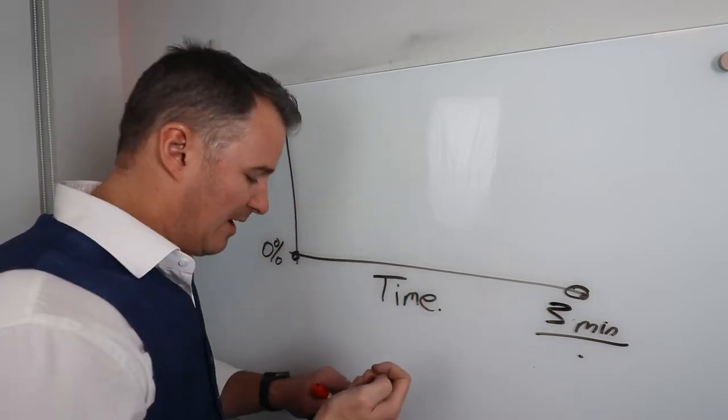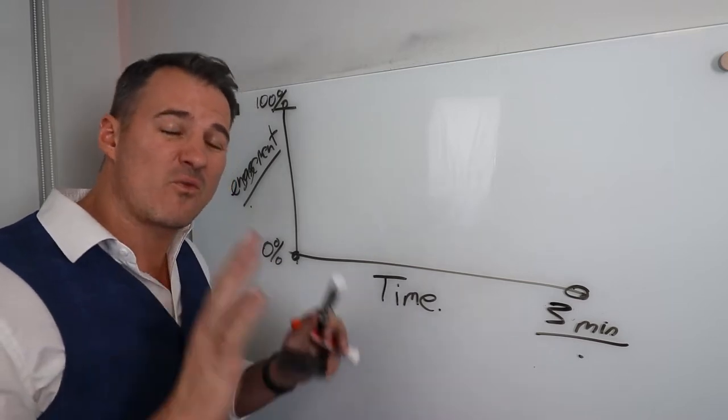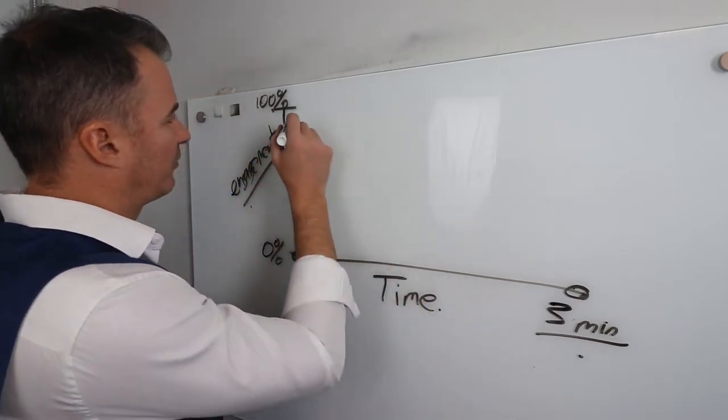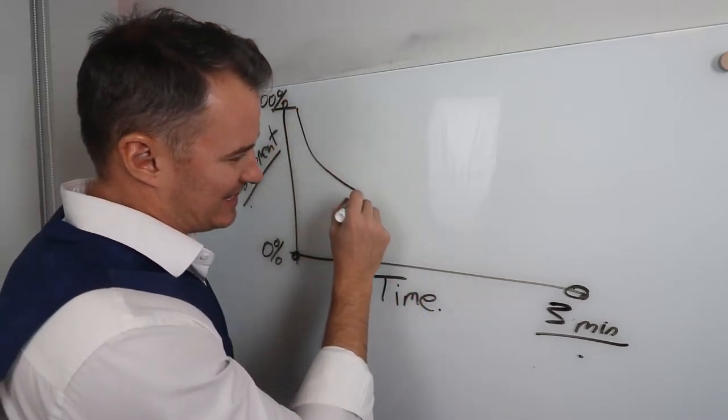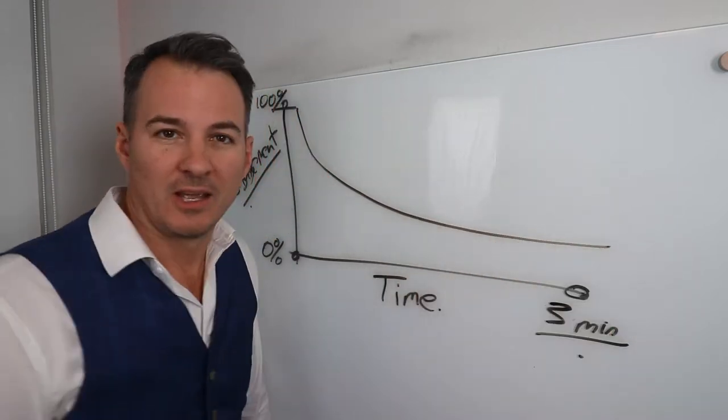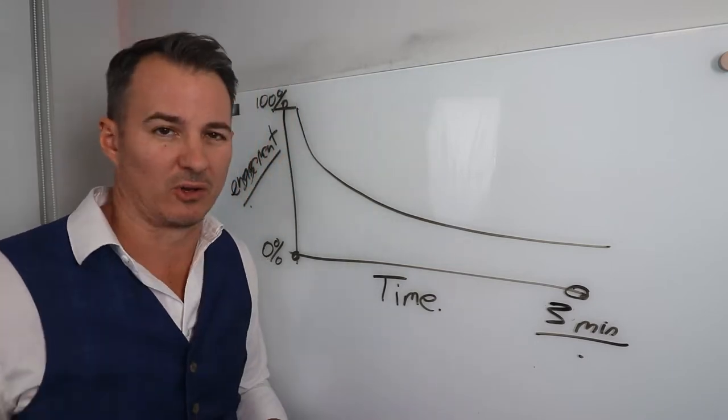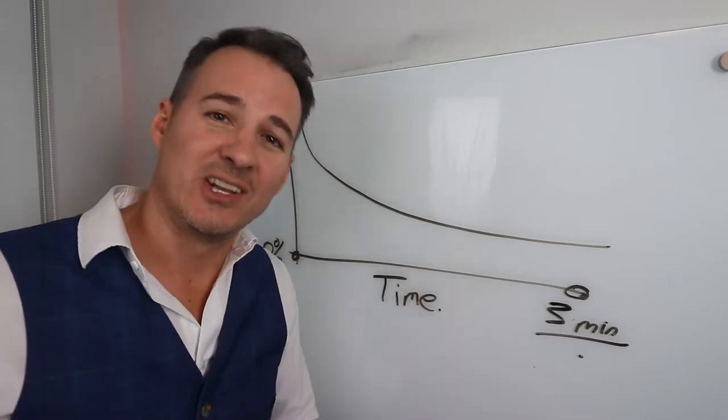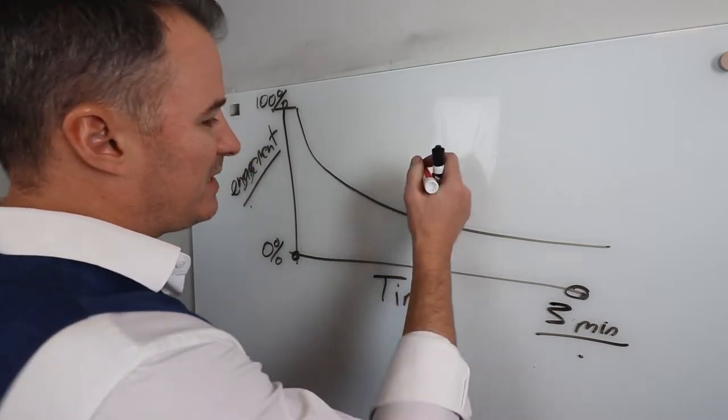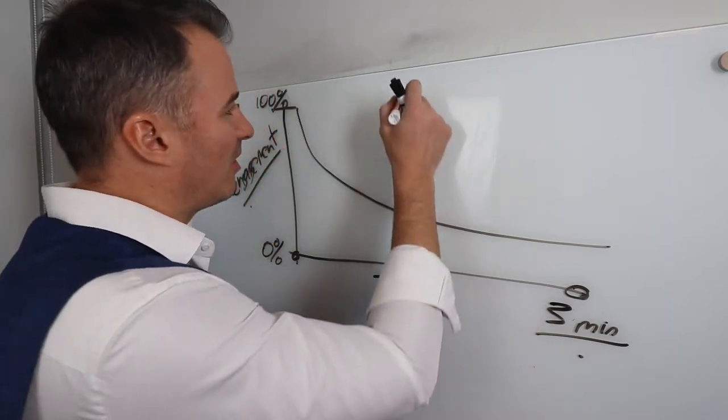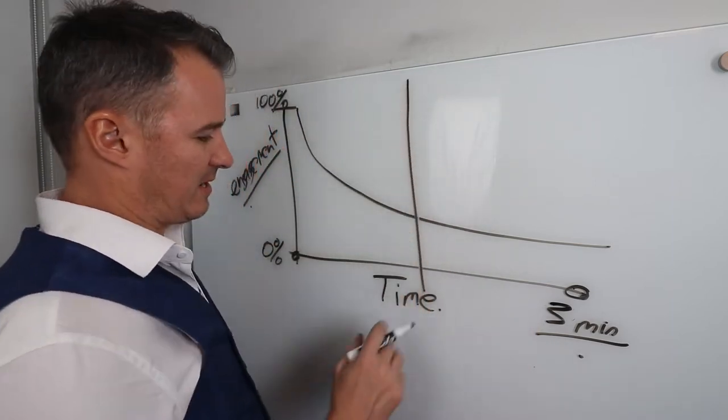Pretty much every single video that I've ever seen looks like this. This graph is statistically the same, every single report. If you have about a two to three minute video, you're gonna have a drop-off rate.